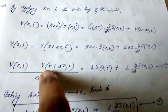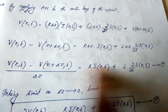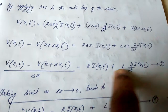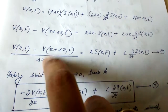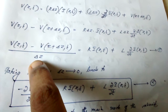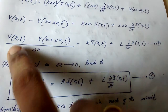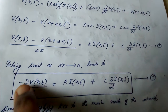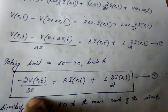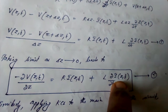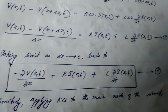So we get: [V(z, t) − V(z + delta z, t)] / delta z equals R·i + L·∂i/∂t. Now if delta z tends to zero, this becomes −∂V/∂z, since V is a function of z. So −∂V/∂z = R·i + L·∂i/∂t. Mark this as equation 2.